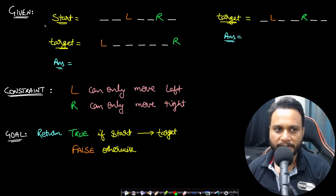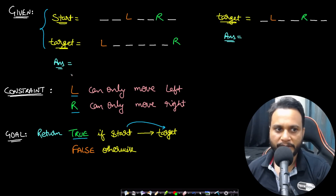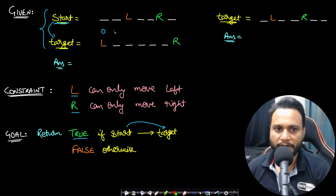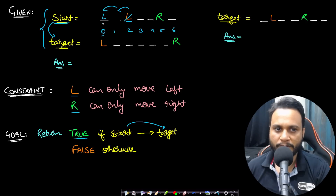Let's look at an example for better understanding. Assuming our start and target strings are given, we need to return true if start can be converted to target by certain movements, otherwise false. In the first example, the indices go from 0 to 6. The L piece at index 2 in start must come to index 0 in target — we can do two movements of L to reach the beginning. So we've matched the first L.